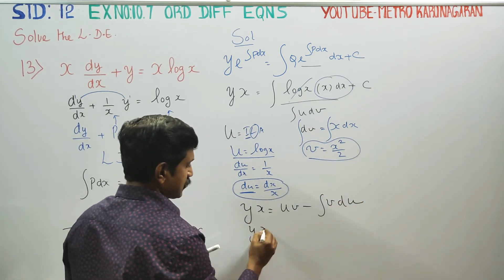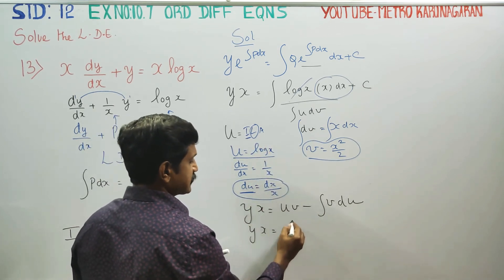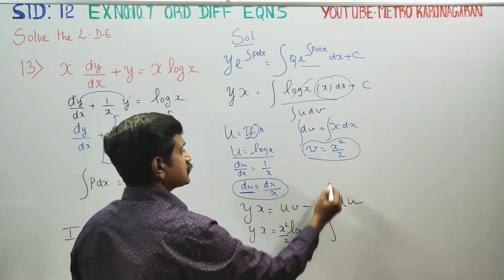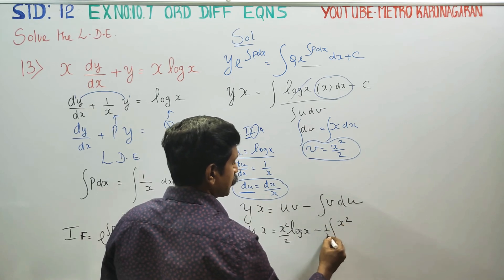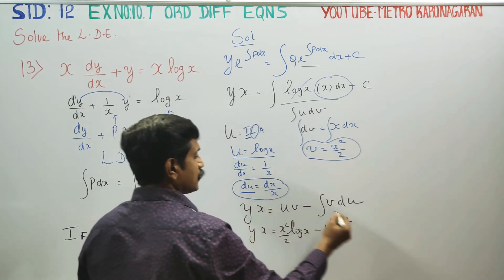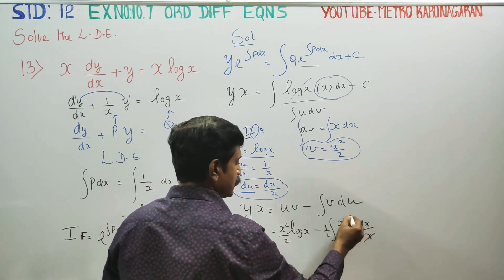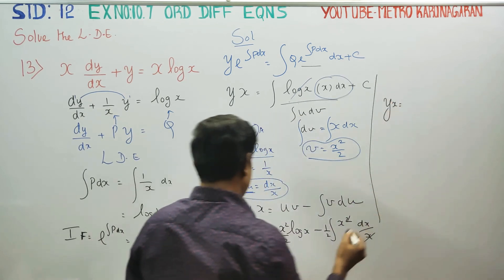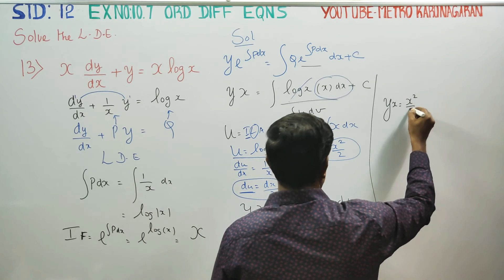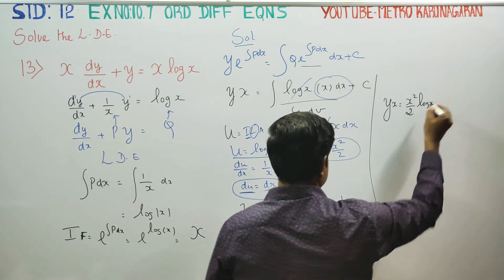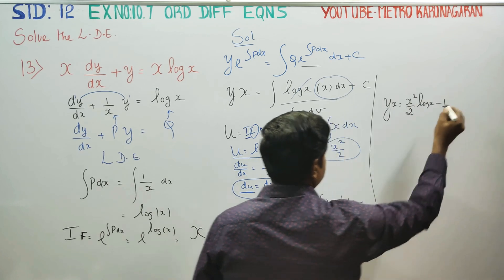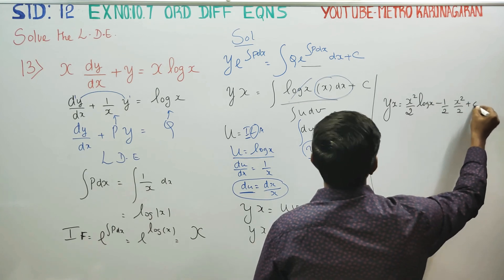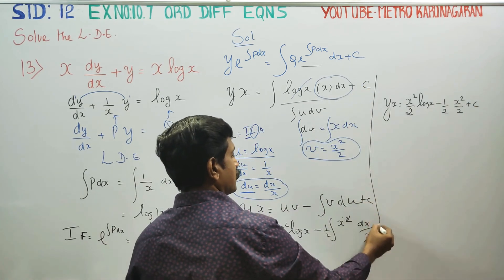Using integration by parts: u times v minus integral of v du. This gives x square by 2 times log x minus integral of x square by 2 times 1 by x dx, which equals x square by 2 log x minus x square by 4 plus c.